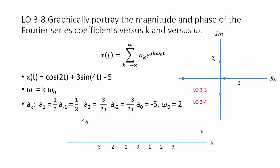Now let's consider the phase, still plotting versus k and looking at the same points, but now asking what angle each complex number makes with the real axis. a sub 1 and a sub negative 1 are positive real values, so they have a phase of 0 — they lie right on the positive real axis. a sub 2 is on the negative imaginary axis, so its phase is negative pi over 2. a sub negative 2 is on the positive imaginary axis, so its phase is positive pi over 2. a sub 0 is on the negative real axis with a phase of pi (by convention, positive pi). All other a sub k have a phase of 0.